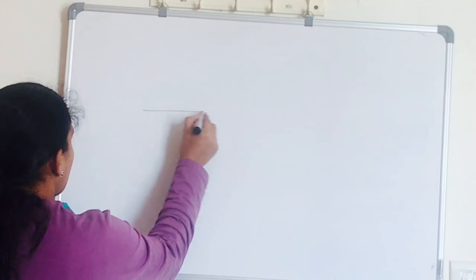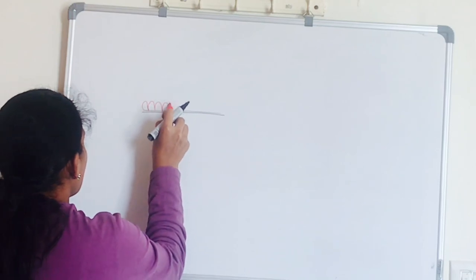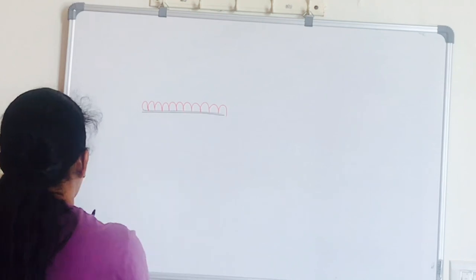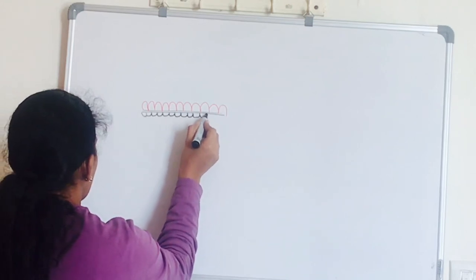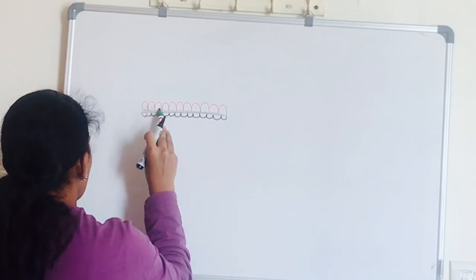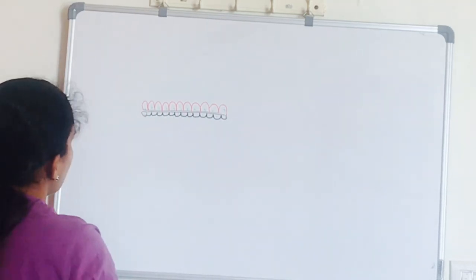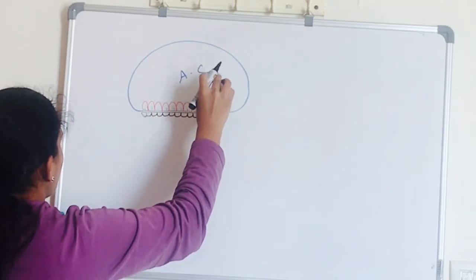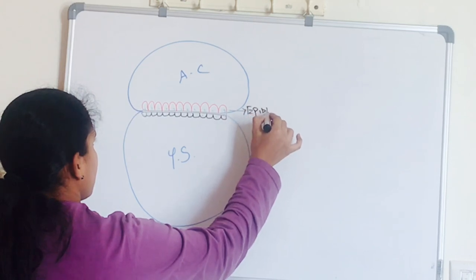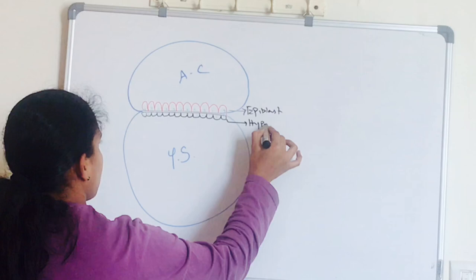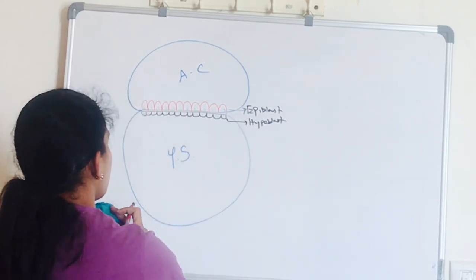Now let's move on to bilaminar germ disc. So we have already seen the upper layer of inner mass cells or columnar cells, and these cells are called as epiblast. The lower cells, these are hypoblast. This is bilaminar germ disc. Bilaminar meaning two layers.